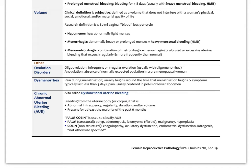We use the PALM-COEIN acronym to classify the different causes of AUB. PALM refers to structural causes: uterine polyps, adenomyosis (endometrial tissue growing into the myometrium), leiomyoma (a benign smooth muscle tumor, also known as a fibroid), and uterine cancer or hyperplasia. COEIN refers to non-structural causes: coagulopathy, ovarian dysfunction, endometrial dysfunction, iatrogenic (medically induced), or not otherwise specified. We go through those differentials when a woman presents with abnormal uterine bleeding to try to isolate the cause.